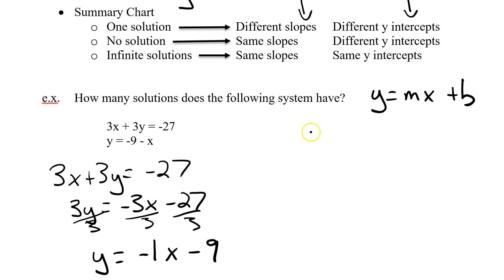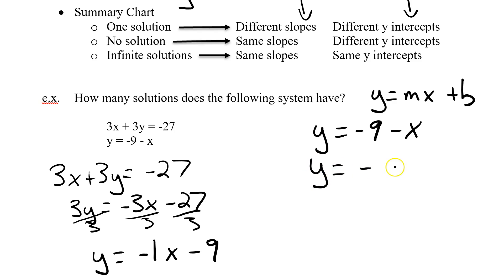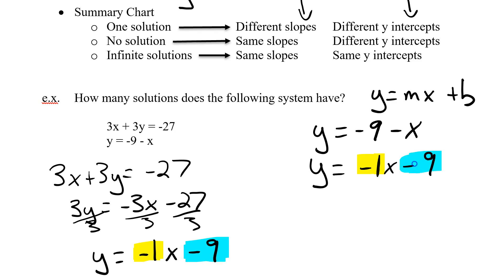Now the second equation: y equals negative 9 minus x. The y is already by itself with a coefficient of 1. To keep proper form, I'll reorder: y equals negative x minus 9. I'll write a 1 explicitly in front of x — when you don't see a 1 there, you assume it is 1. So now both equations are in slope-intercept form. Slopes: negative 1 and negative 1 — they're the same. Y-intercepts: negative 9 and negative 9 — they're the same.